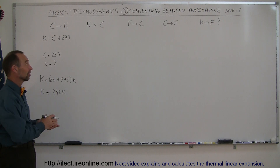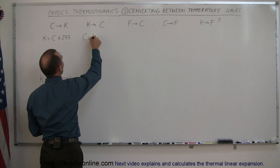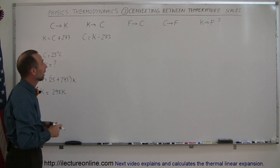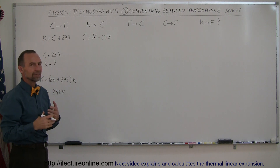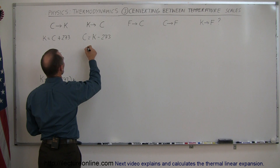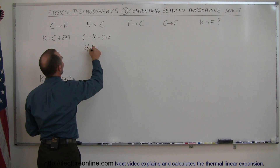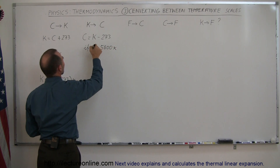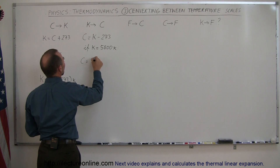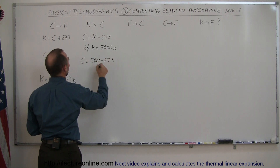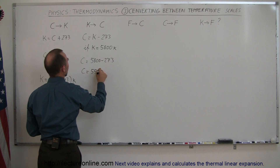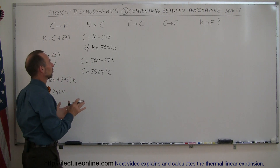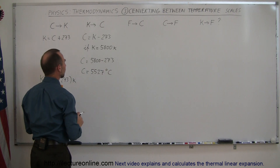How do we convert back from Kelvin to centigrade degrees? Centigrade degrees is equal to Kelvin minus 273. Let's say the surface temperature of the Sun is 5,800 Kelvin. If K equals 5,800 Kelvin, then centigrade degrees is equal to 5,800 minus 273, and so C is equal to 5,527 degrees centigrade. You just understand that this is how you convert, and then you put the proper units on it.